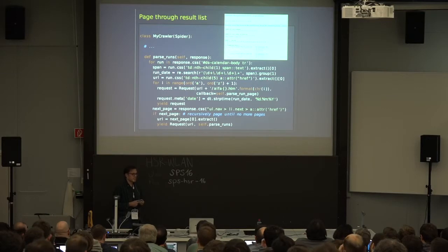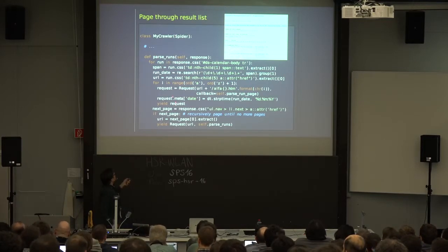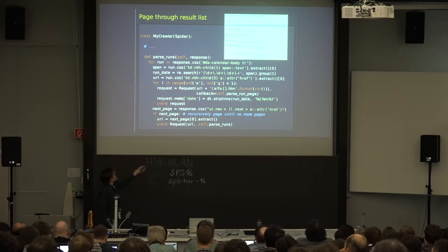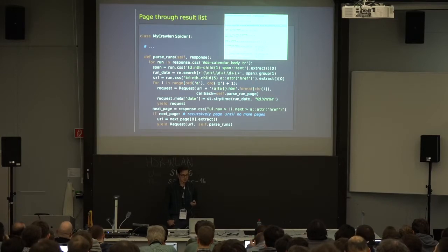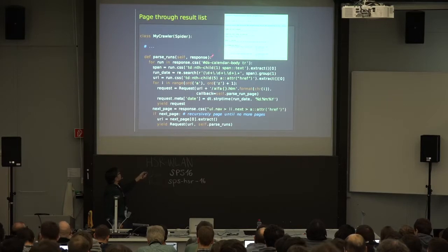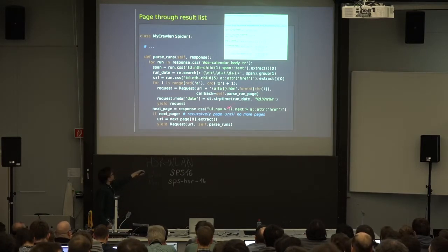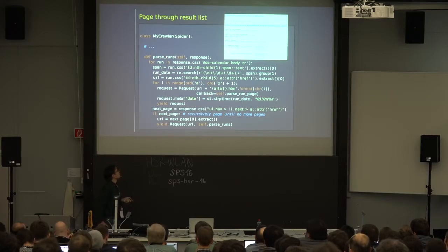I then want to go through all these run results alphabetically from A to Z, so I yield requests for all these different run result pages. Request meta is a nice concept to store metadata that's available when you parse the response. Here's the code to loop through the different pages — we go through recursively until there is no next page. I use a CSS path expression to check if there's a next link, and as long as there is one, I yield requests to page through recursively.